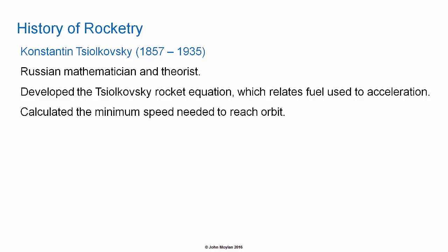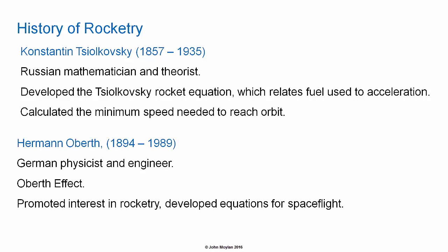History of rocketry: Konstantin Tsiolkovsky was a Russian mathematician and theorist who developed the Tsiolkovsky rocket equation, which relates fuel use to acceleration. He also calculated the minimum speed needed for a projectile to reach orbit. Hermann Oberth was a German physicist and engineer who conceived of the Oberth effect, promoted interest in rocketry, and developed equations for space flight.